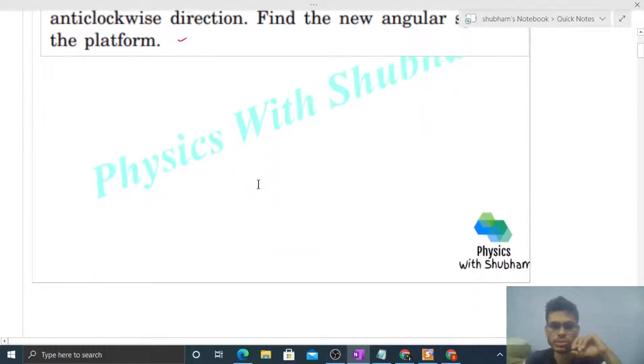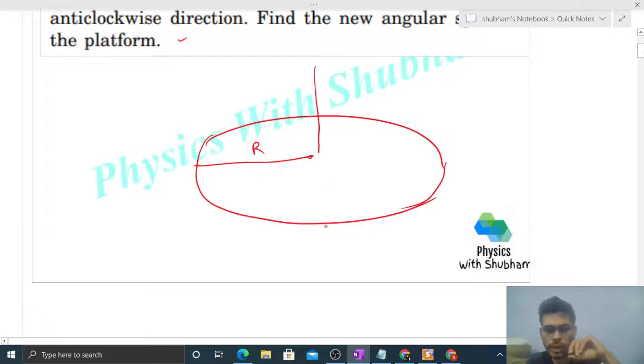In the previous problem, the platform has radius R and moment of inertia I about its axis. There is a kid of mass capital M standing on the rim of the platform. Initially, this platform and the kid is rotating in anticlockwise direction with angular velocity omega.